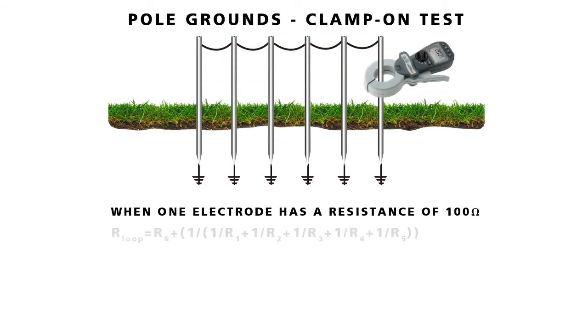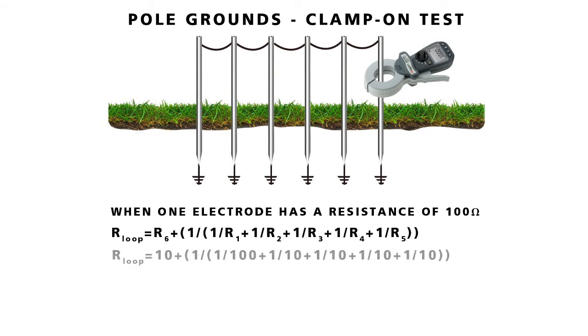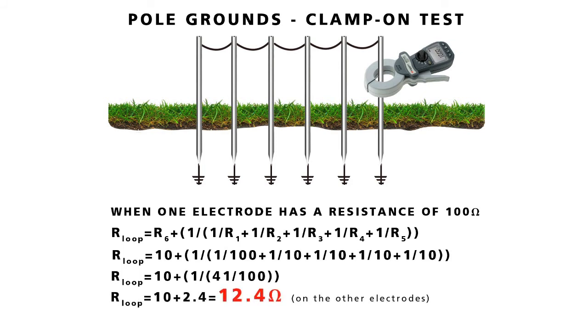But what if the high resistance ground was part of the parallel return? The calculation shows that it makes only a negligible contribution to the measurement. In a parallel system, a bad ground does not have a large effect.